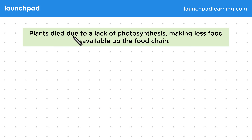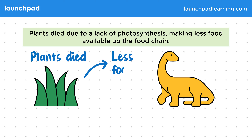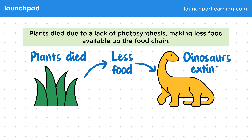Plants died due to a lack of photosynthesis, making less food available up the food chain. With the sunlight blocked out, the temperature would have changed and therefore there would be less food available for the primary, secondary and tertiary consumers. Less food put more pressure on dinosaurs, leading to their death in huge numbers.